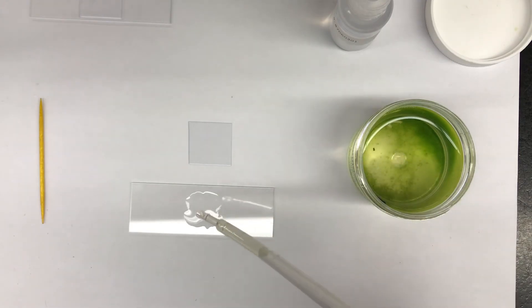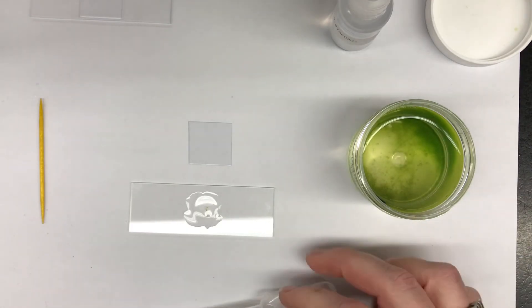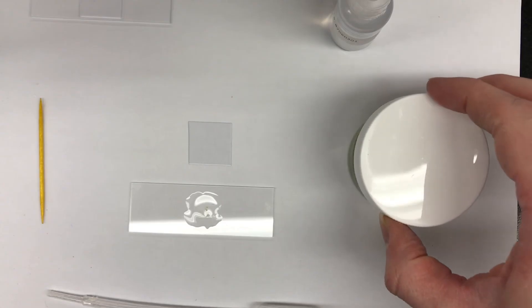You're going to place one drop directly in the center of where you put the protosloe. Put the lid back on the jar.